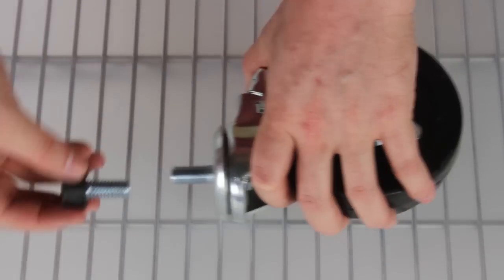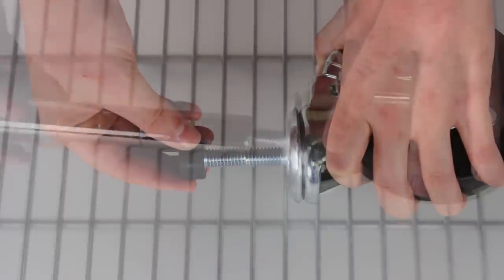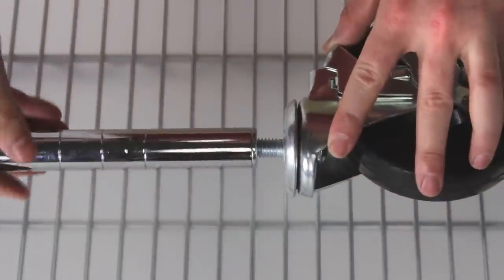Threaded casters fit SI brand shelving at 12 threads per inch. That's the same as our leveling feet, which is why you can interchange them with no problem.